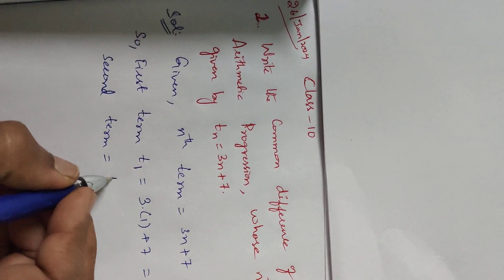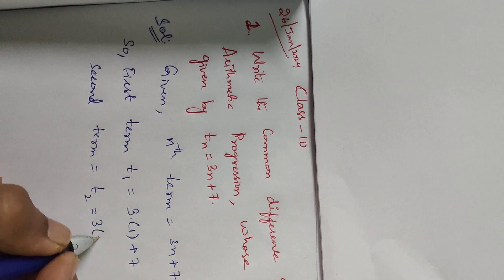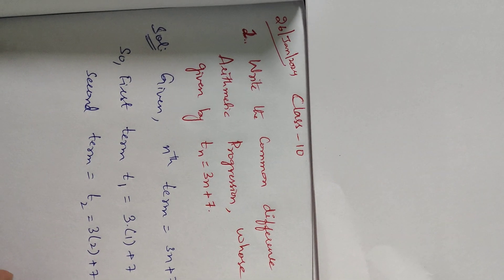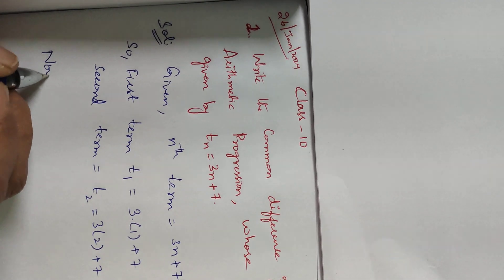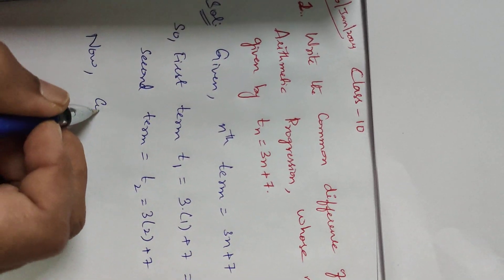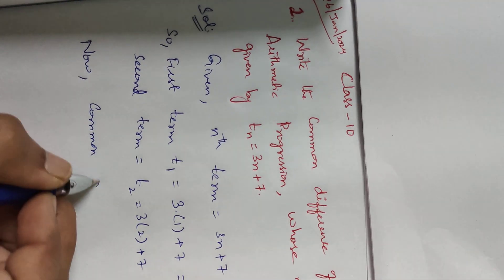Similarly, the second term is equal to T_2 equals 3 times 2 plus 7, which is 6 plus 7 equals 13. Now the common difference is T_2 minus T_1.